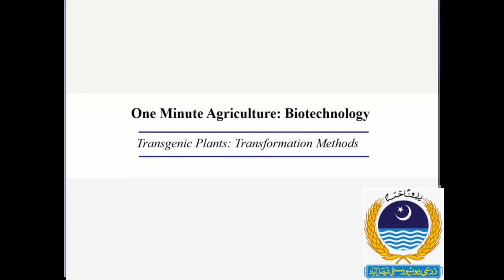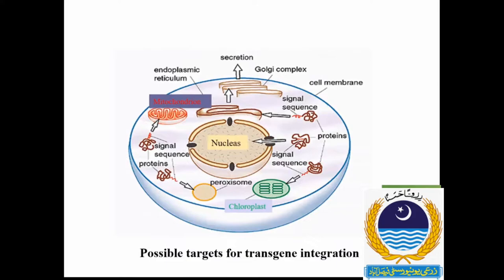Transgenic technology has contributed to a great extent and more than 179 million hectares of the area is under transgenics. In plants, there are three cellular organelles which may be exploited for genetic transformation – the nucleus, the chloroplasts and mitochondria.